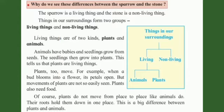Things in our surroundings form two groups: living things and non-living things. Living things are of two kinds: plants and animals. Animals have babies, and seedlings grow from seeds. The seedlings then grow into plants. This tells us that plants are living things. Plants do move.